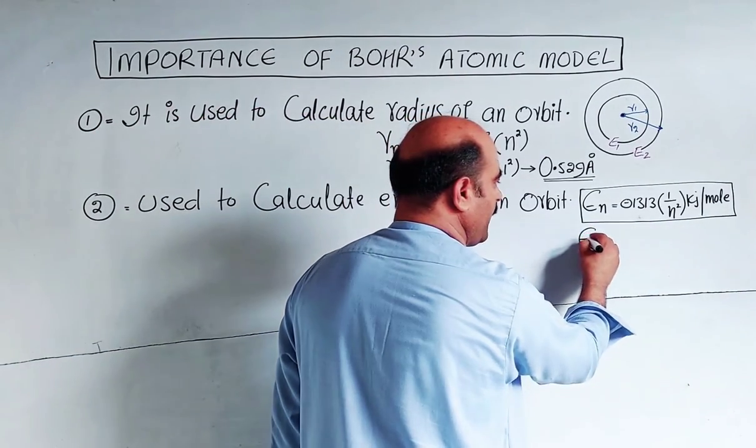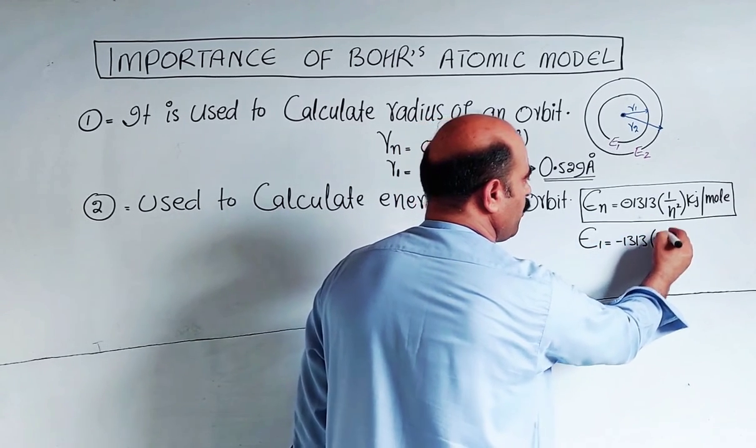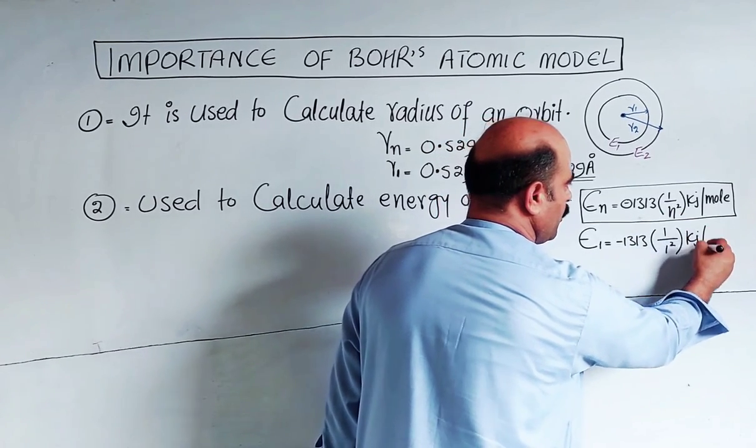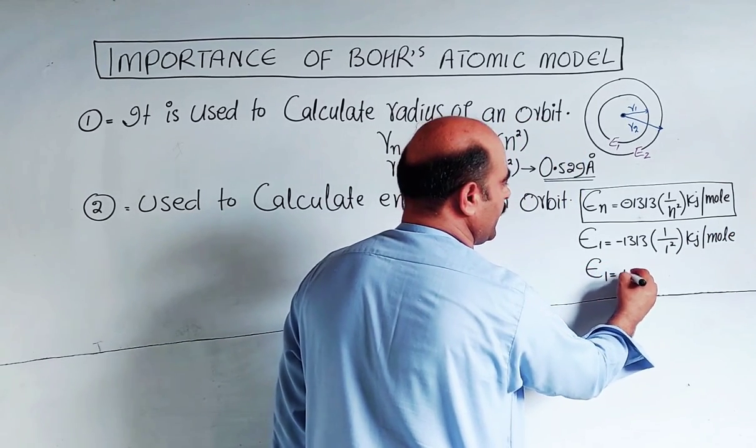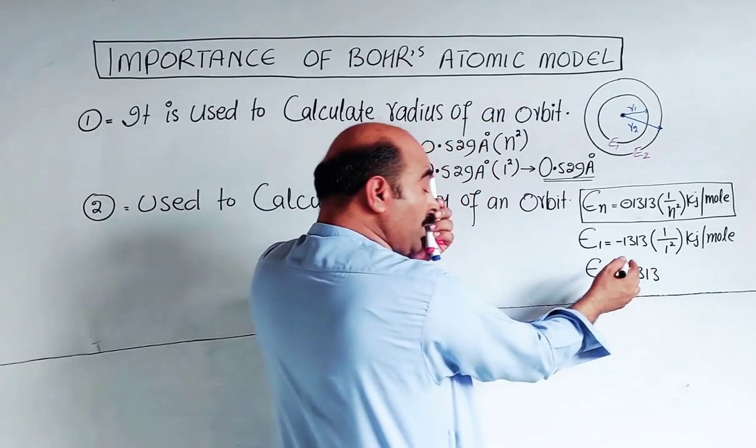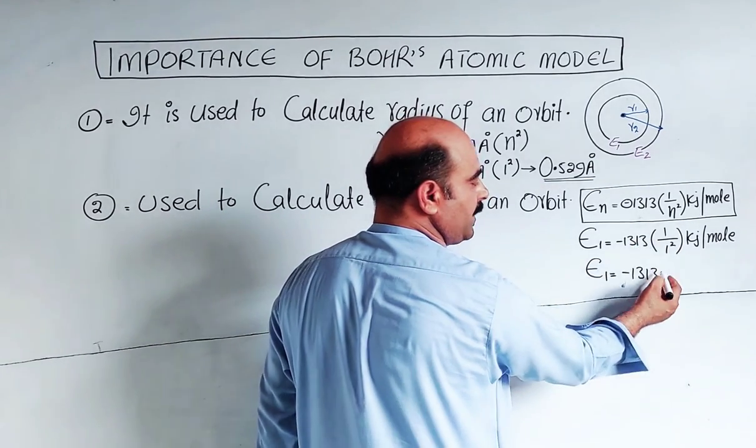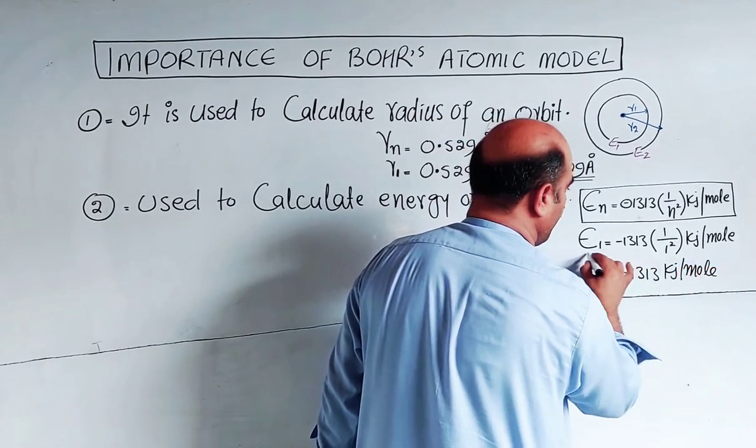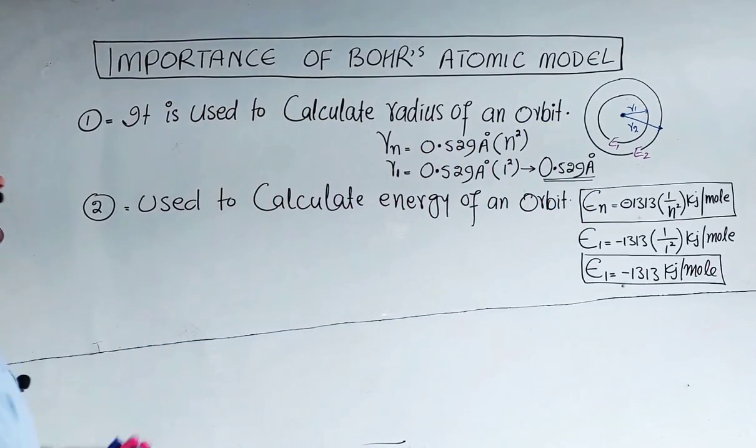Now the first orbit energy: put n equals 1. One squared equals one. One divided by one equals one. So minus 1313 times one equals minus 1313 kilojoules per mole. That's the first orbit energy, fixed and quantized. That's the theory.